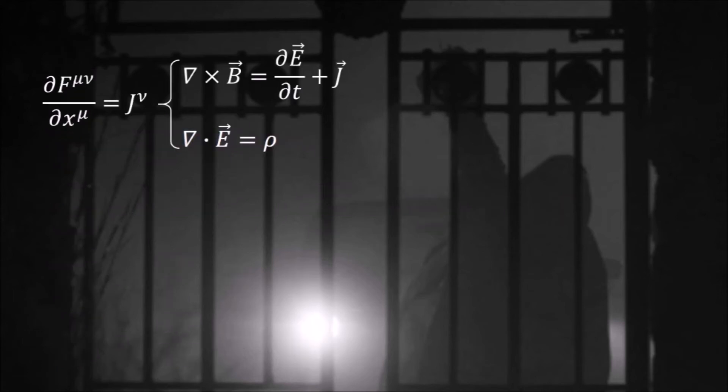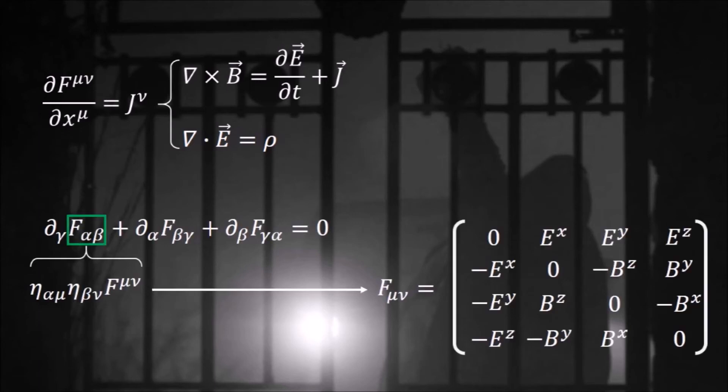The other two Maxwell's equations are contained within this relation, where F with lower indices is the contracted electromagnetic tensor. All indices here are free. You might be saying, hang on, don't we have too many equations here?